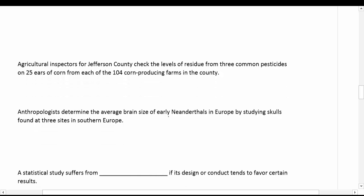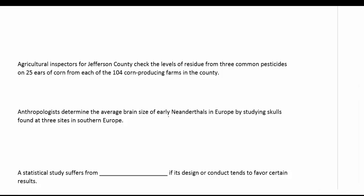Agriculture inspectors from Jefferson County checked the levels of residue from three common pesticides on 25 ears of corn from each of the 104 cornfields. You have to think carefully about what they did — they first looked at the type of farm, then randomly picked within that type. They had to sort the farms first, deciding you were a corn-producing farm. So this would be a stratified sample.